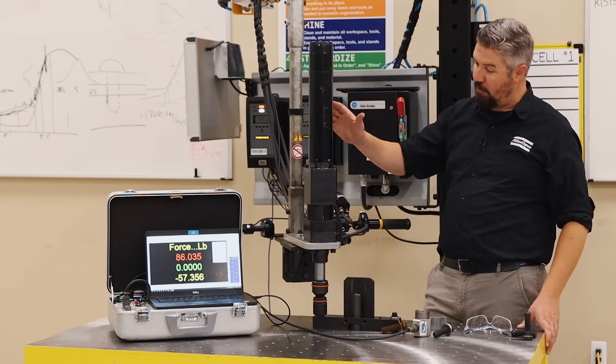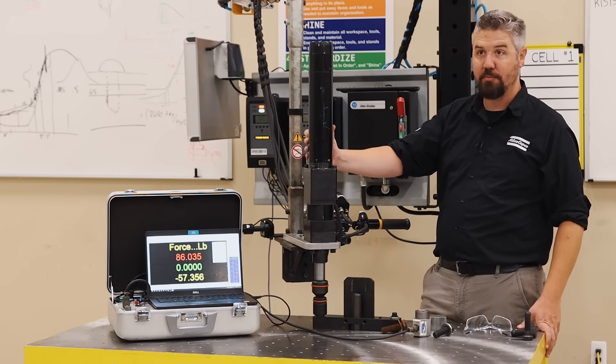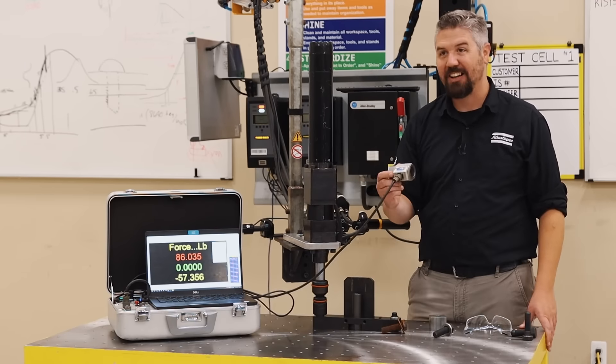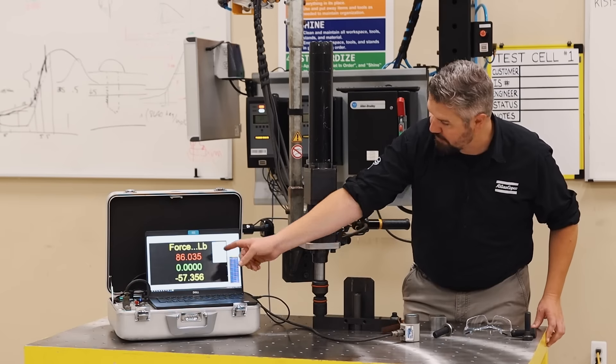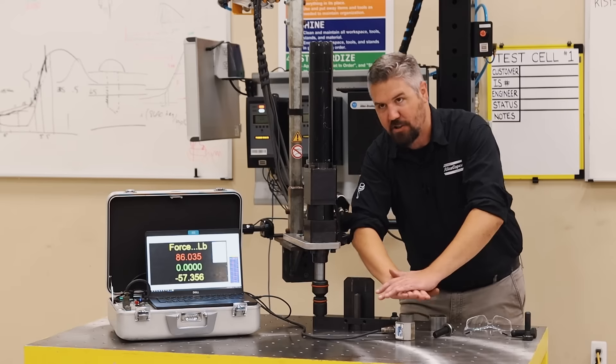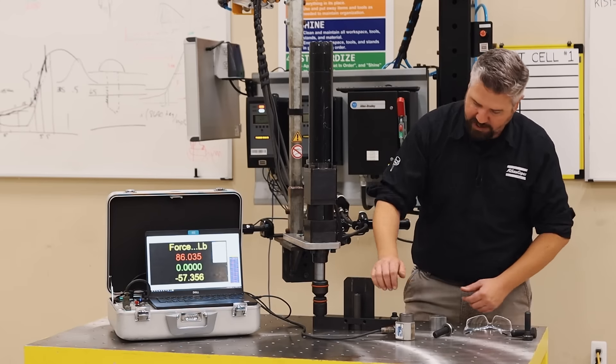Alright, for this experiment we've got our power tool programmed for 500 Newton meters and we're going to be measuring the clamping force that the bolt generates with this load cell. So you can see on the screen the force reading. This is going to measure how hard the bolt is clamping down on the part.